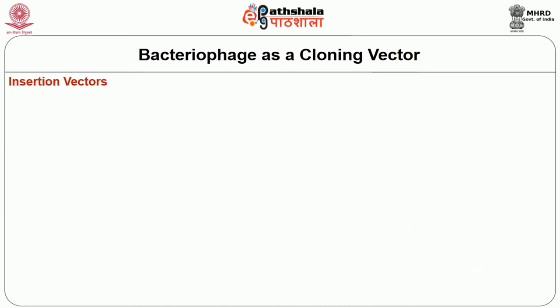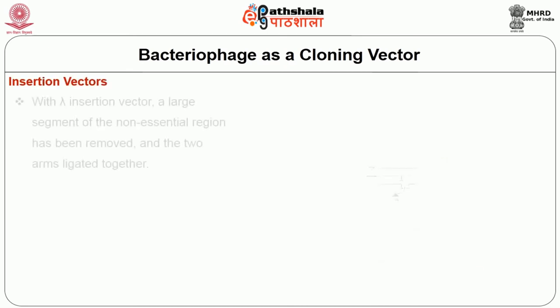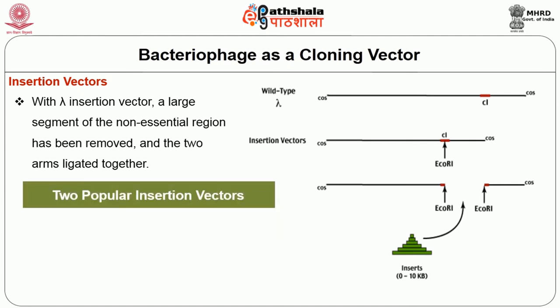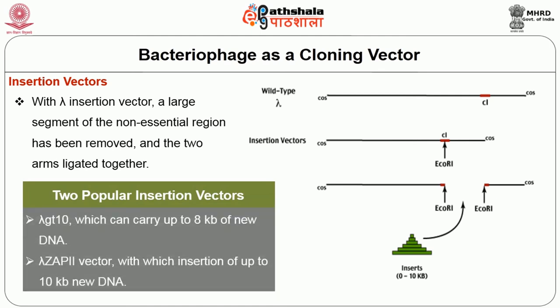Coming to insertion vectors: with a lambda insertion vector, a large segment of the non-essential region has been removed and the two arms are ligated together. The two popular insertion vectors are lambda GT10, which can carry up to 8 kb of new DNA, and lambda ZAP2, which can accommodate insertion of up to 10 kb of new DNA.